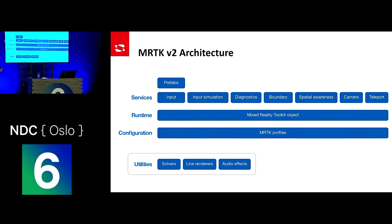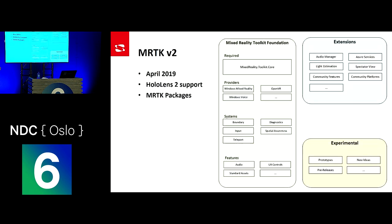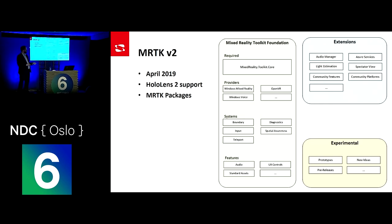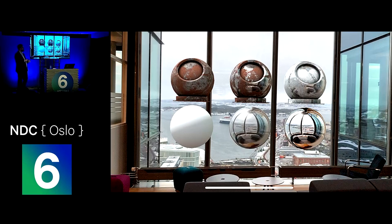This is the architecture of the Mixed Reality Toolkit. You have prefabs like those control prefabs, services like the input service and input simulation service, all running on the Mixed Reality Toolkit object runtime in your Unity scene, pulling configuration from Mixed Reality Toolkit profiles. It also has utilities largely independent from the services. In April they updated the toolkit to add HoloLens 2 support and bundled it into different packages: the core foundation with all core services, plus optional extensions and experimental packages such as the light estimation service.